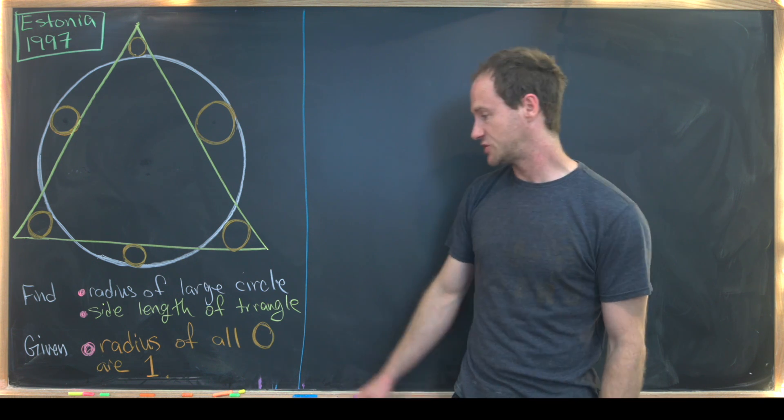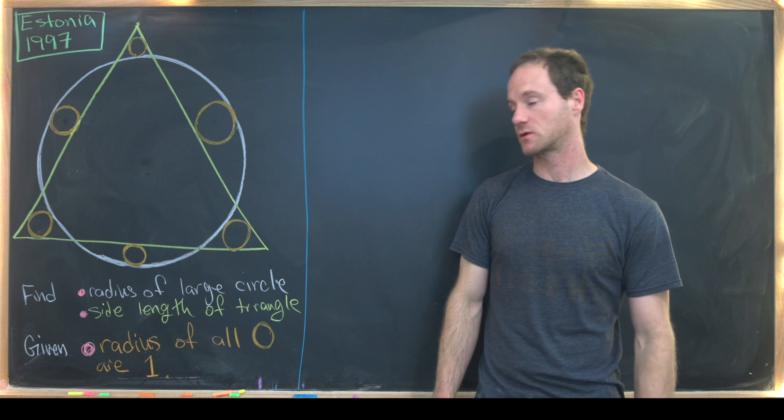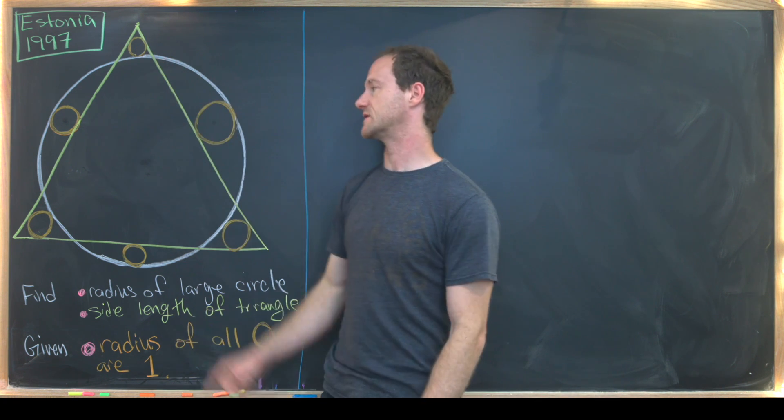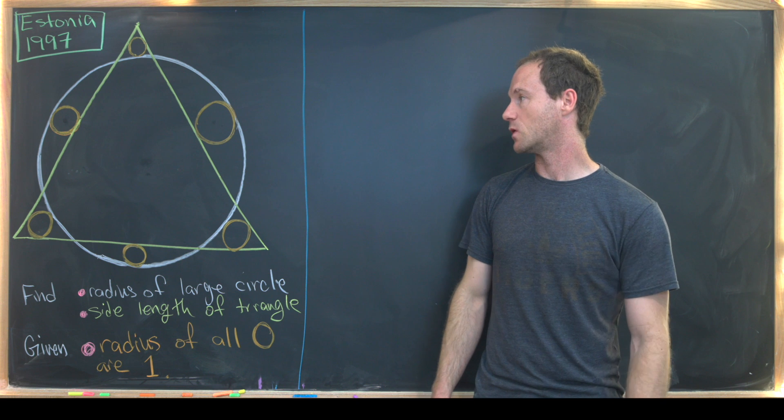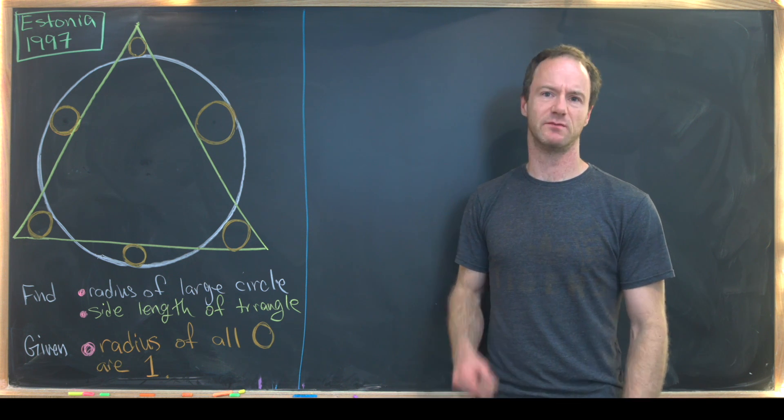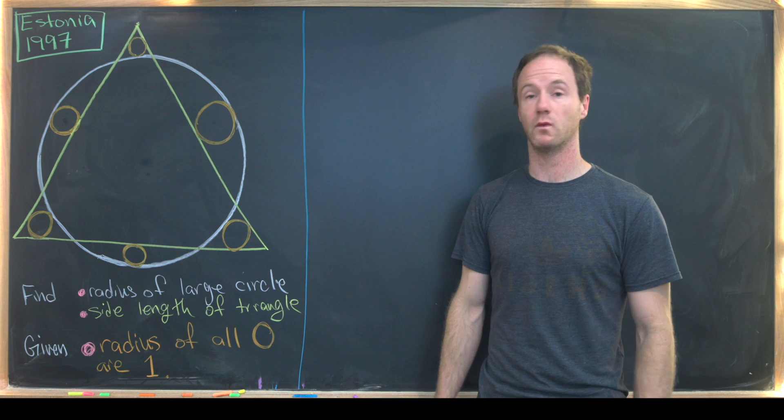And we want to assume that the radius of all of these sub-circles is one. So the radius of this is one, the radius of this is one, the radius of that is one, and so on and so forth. Maybe dispel your disbelief by my poor drawing, but suffice it to say those are all one.